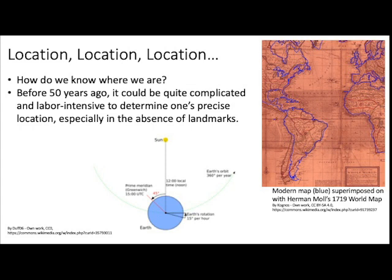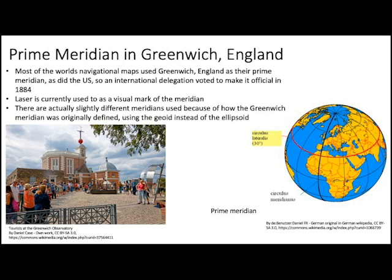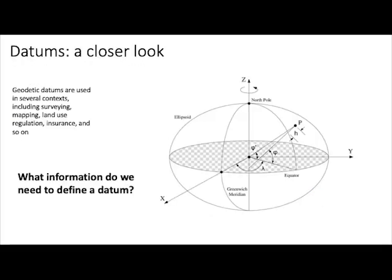Speaking of longitude, the prime meridian in Greenwich, England, is just another kind of defined origin for our geodetic system, our geodetic datum. For the latitude and longitude system, we're going to define the Greenwich, England meridian as the prime meridian, or the zero longitude mark. There are actually some different zero degree longitude marks depending on how you define the latitude and longitude system, and the original Greenwich meridian was defined using the geoid instead of the ellipsoid. We can use this information to determine locations on the surface of the Earth.